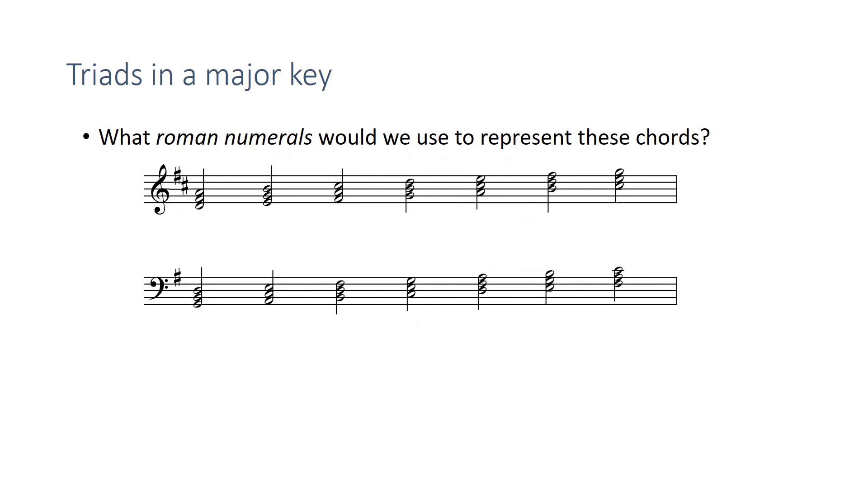So that's how it works for C major. But what Roman numerals would we use to represent the chords in these keys, in the key of D and in the key of G? They're the same, right? They're the same qualities in any major key because the construction of a major scale is the same.